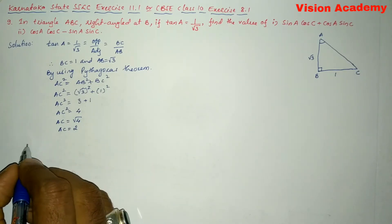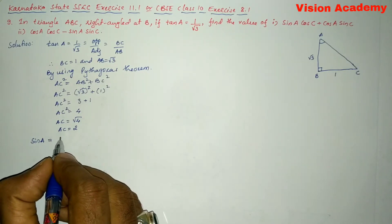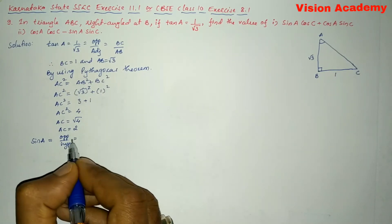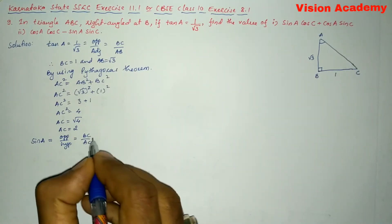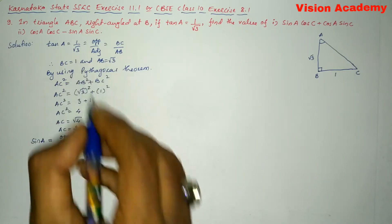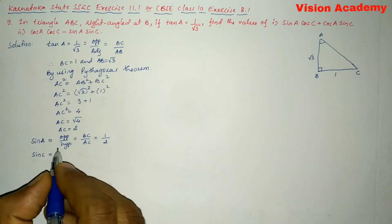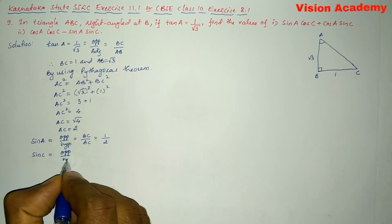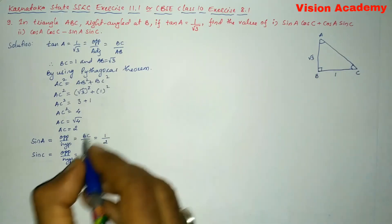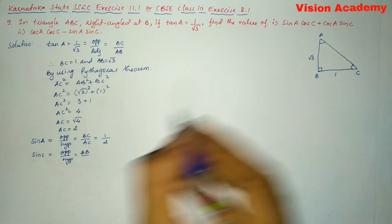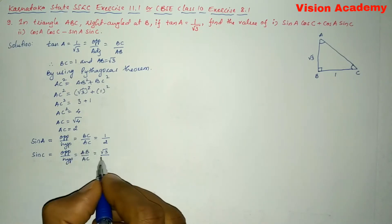Now let us write sin A. Sin A is equal to opposite by hypotenuse, so BC by AC, which is 1 by 2. Now sin C is equal to opposite by hypotenuse, but here the angle changes. Opposite to angle C is AB, so sin C is equal to AB by AC, which is square root of 3 divided by 2.